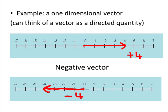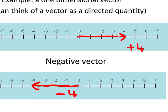If you look at a negative vector compared to a positive vector, both vectors have the same length of 4 and they're parallel to each other, but they have opposite directions.